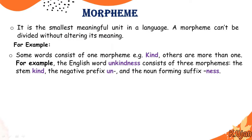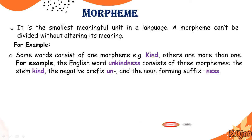For example, the word 'kind' consists of one morpheme, while others have more than one. The English word 'unkindness' consists of three morphemes: 'kind', the negative prefix 'un-', and the noun-forming suffix '-ness'. So the word 'unkindness' is made up of three morphemes: kind, un, and -ness.